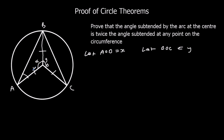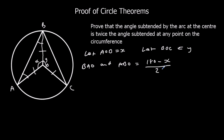We've got these two angles based on an isosceles triangle, and angles in a triangle add up to 180. So angles BAO and ABO: we do 180 take away X and then halve it — so (180 − X) ÷ 2. And we can do the same on the other side: angles BCO and CBO equal (180 − Y) ÷ 2.